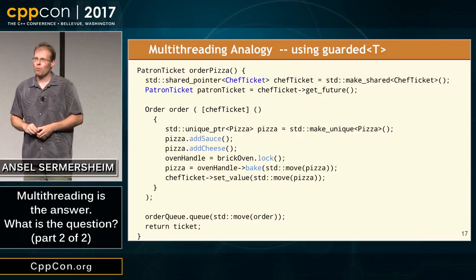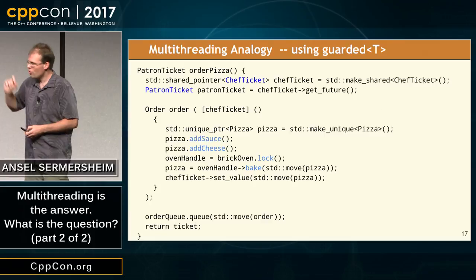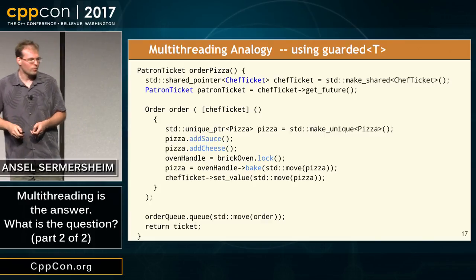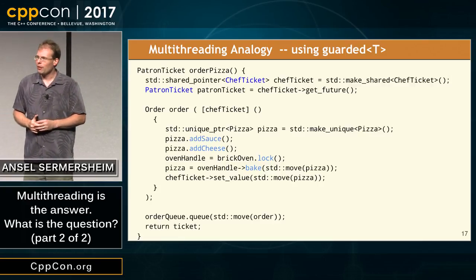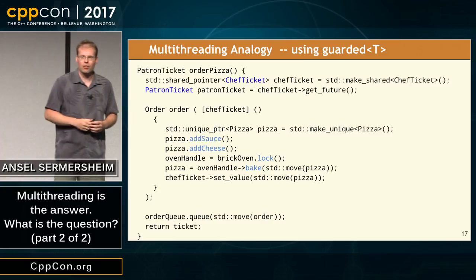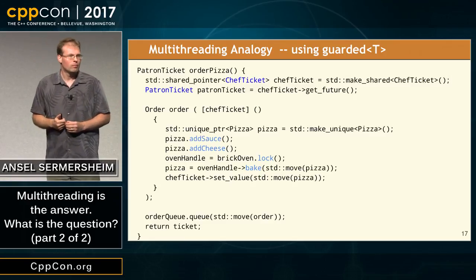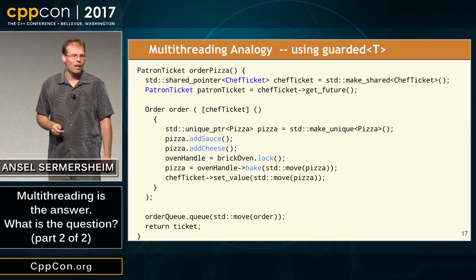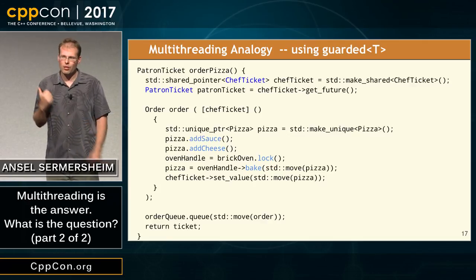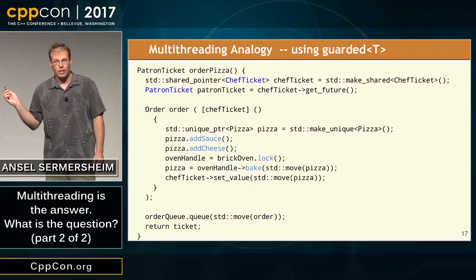Now I can go back to my restaurant example and implement something more simply. This is not a huge change, but it makes the code more reviewable. When I lock the brick oven, I get an oven handle back. This is the only way you can get access to the brick oven, which means I now cannot have a race condition in this code. I can absolutely 100% guarantee there is no race condition accessing this shared resource, because this resource has been guarded — there's no other way to get access to it.